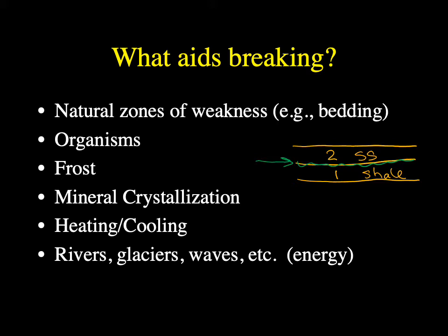Organisms can really help break apart rock, and plants are actually much more destructive than other organisms. Plant roots get into small cracks, and as the roots grow bigger, they actually start to force the cracks open. Frost can do this as well — water gets into cracks, and when it freezes it expands, heaving rocks and making cracks larger.